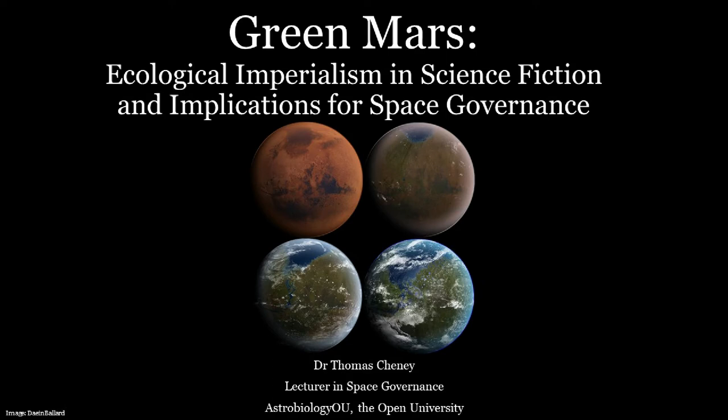We start with Arthur C. Clarke's 1951 The Sands of Mars, which is the first instance of terraforming in any kind of science fiction. I'm also looking at the seminal Kim Stanley Robinson's Mars Trilogy — Red Mars, Blue Mars, and Green Mars — which go into quite a lot of detail on the concepts of terraforming.